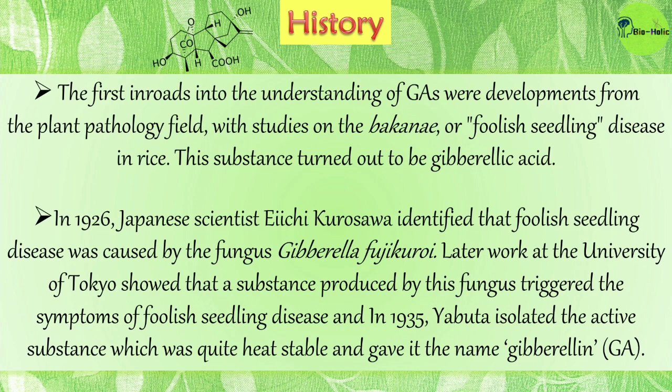Later work at the University of Tokyo showed that a substance produced by this fungus triggered the symptoms of foolish seedling disease. In 1935, Yabuta isolated the active substance, which was quite heat stable, and gave it the name gibberellin.